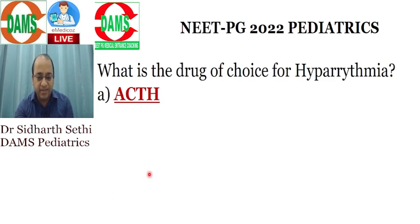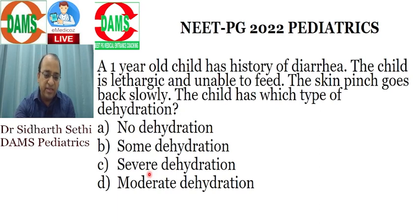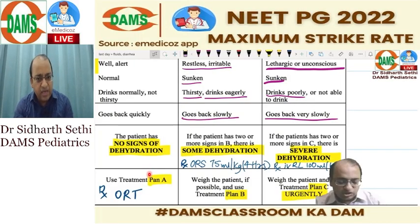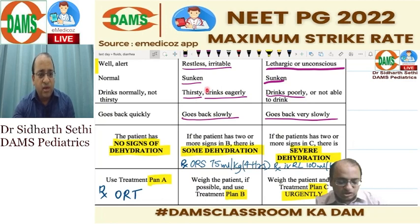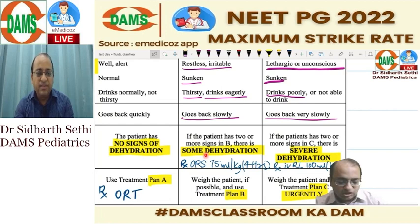There was a question on a child who has diarrhea, is lethargic, and the skin pinch goes back slowly — what kind of dehydration is this? In each and every class of ours we discuss classifying dehydration. If a child is irritable, has sunken eyes, is thirsty, drinks water eagerly, and turgor goes back slowly, it is some or moderate dehydration. The drug of choice for moderate dehydration is ORS 75 ml per kg over 4 hours — this is called Plan B.